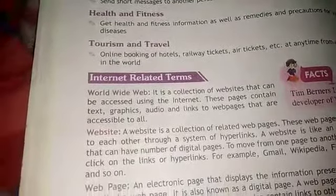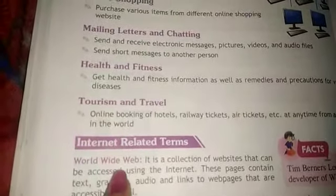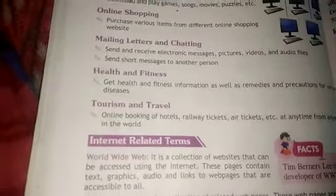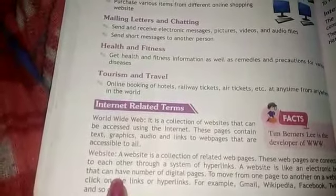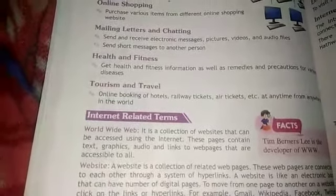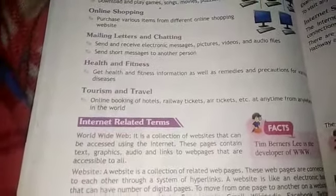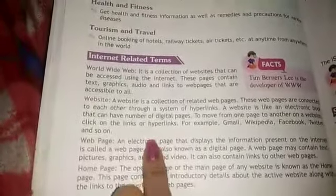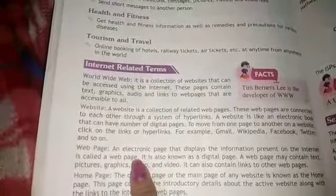Now, internet-related terms. We have also studied the WWW — World Wide Web. What is a website? A website is a collection of related web pages. Sites like Facebook and Instagram are social networking sites. An electronic page that displays information present on the internet is called a web page.